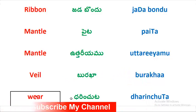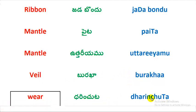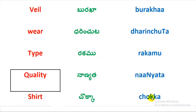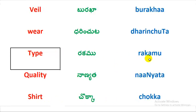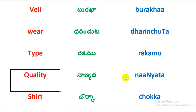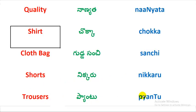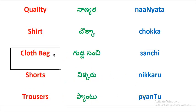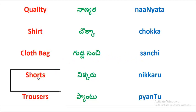Wear — Dharinchuta. Type — Rakamu. Quality — Naniata. Shirt — Chokka. Cloth bag — Guddha Sanchi. Shorts — Nikkaru. Trousers — Pantu.